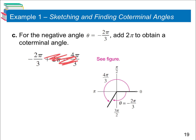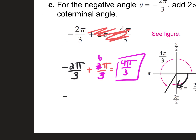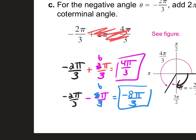Here's a good example. Given negative 2 pi over 3: that means I start on the initial side and go downward. To find a positive coterminal, add 2 pi. Common denominator between 3 and 1 is 3, so 2 pi becomes 6 pi over 3. Negative 2 plus 6 gives 4 pi over 3 — that's positive. Now for a negative coterminal: negative 2 pi over 3 minus 2 pi. Common denominator is 3, so 2 pi becomes 6 pi over 3. Negative 2 minus 6 is negative 8 pi over 3.